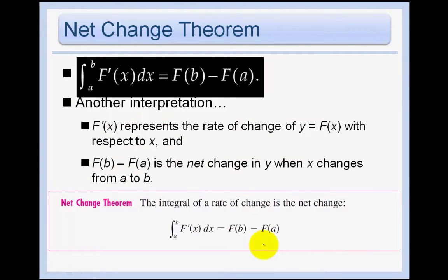The net change theorem is just the same thing except we're just talking about rates of change. So another interpretation of big F prime represents the rate of change of big F(x) with respect to x. And F(b) minus F(a) is the net change in y when x changes from a to b.